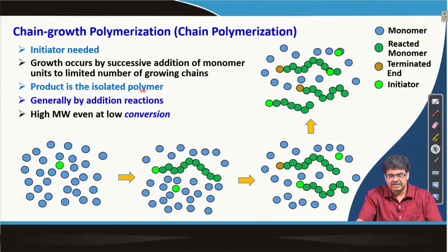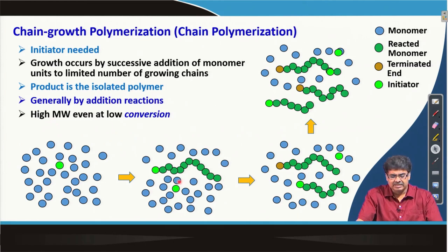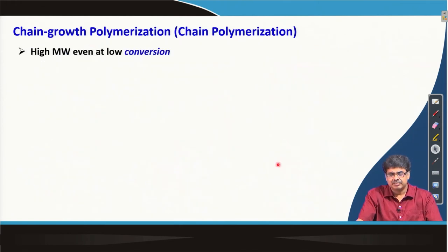In this case we require an initiator to initiate the chain, and growth occurs by successive addition of monomer units to the limited number of growing chains. One important thing we discussed is that at the end of the polymerization we need to isolate the polymer chains — our actual product is the isolated polymer chains, not the final mixture after the reaction. Generally, it is a polymerization formed by addition reaction, and immediately after initiation, large polymer chains start producing.